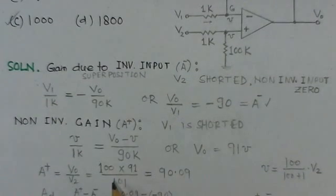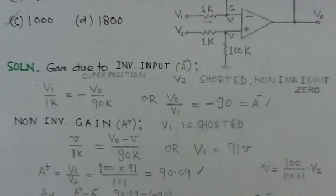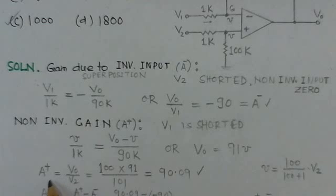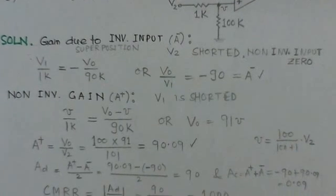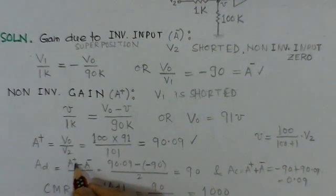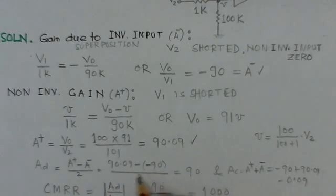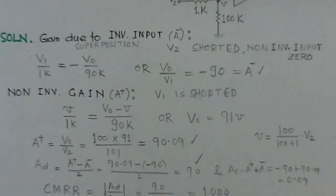The value of V0 over V2 comes out to be 90.09. This is the non-inverting gain. The differential gain A_d is then (A-plus minus A-minus) divided by 2, which gives a value of approximately 90.